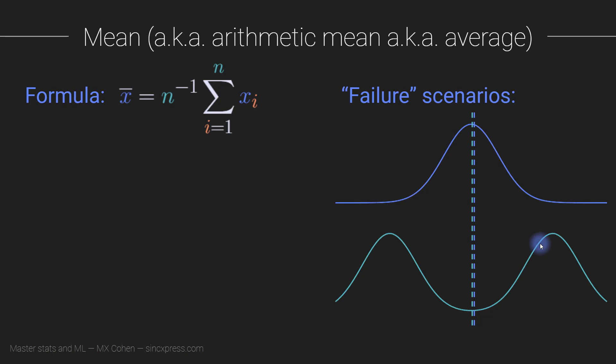For this bimodal distribution with two peaks, we can compute the mean here, no problem, but it's going to be in the middle. That's not really telling us where the data values are clustering. So although we can compute the mean, in this case, it's not necessarily informative about what the distribution looks like.